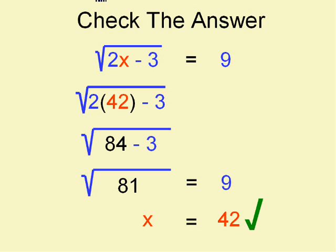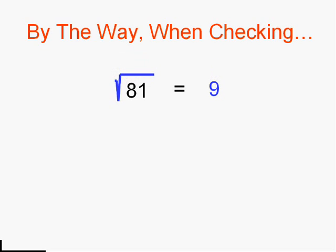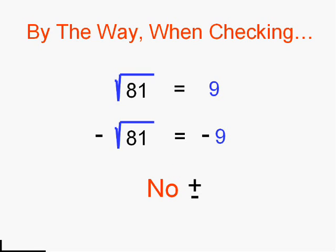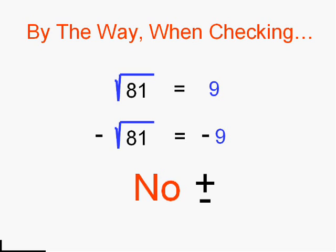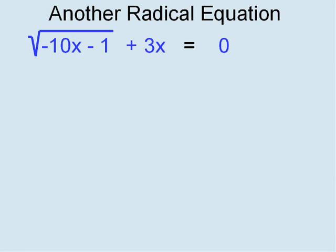Before we try a more difficult one — when you're checking, the square root of a number, for instance the square root of 81, can be 9 or negative 9. However, when checking, we're only going to use the positive square root. I know, but we only use the positive square root when checking.